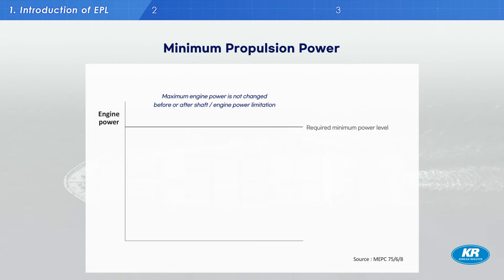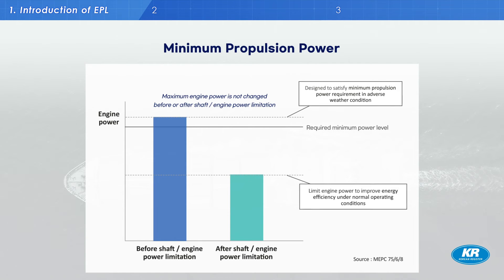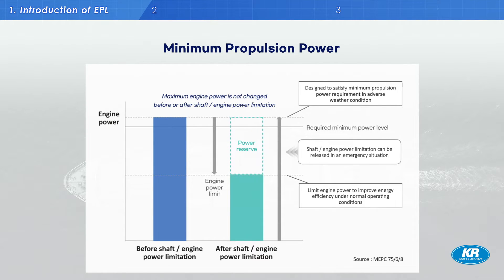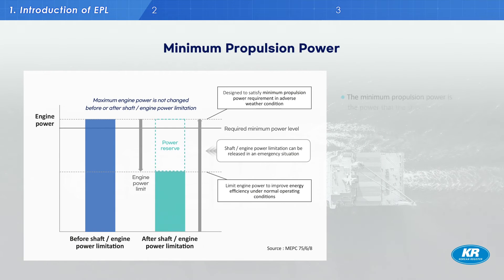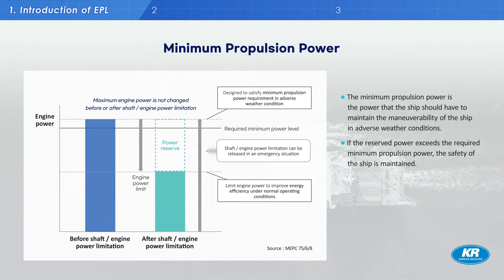To satisfy the EEXI target, there may be concerns that implementing a minimum propulsion power may compromise the seaworthiness of the ship. According to the conclusions of MEPC 75-6-8, EPL is a solution for efficient vessel operation only and does not affect the minimum propulsion power. It should be understood that EPL settings can and should be able to return to the original engine power at any time, so there is no need to be concerned about minimum propulsion power.